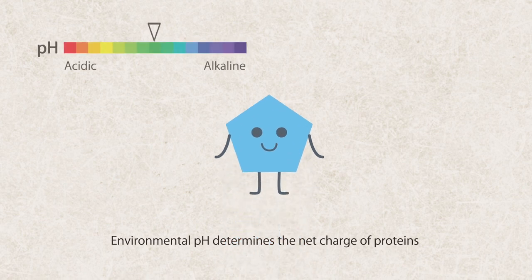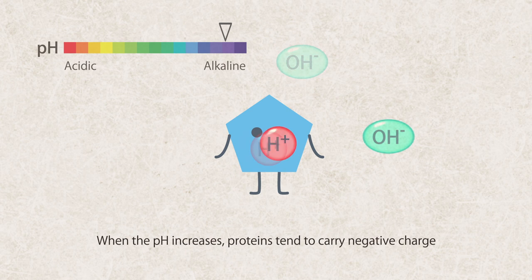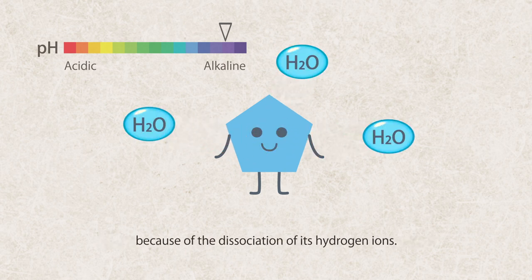Environmental pH determines the net charge of proteins. When the pH increases, proteins tend to carry negative charge because of the dissociation of its hydrogen ions.